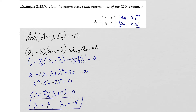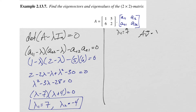That gives us our two eigenvalues: lambda₁ equals 7 and lambda₂ equals negative 4. Now we have to find our eigenvectors. We'll use one eigenvalue at a time — starting with lambda₁ equals 7 to solve for our first eigenvector. We know that A times an eigenvector gives back the eigenvalue times the eigenvector — just a scalar multiple of the vector.